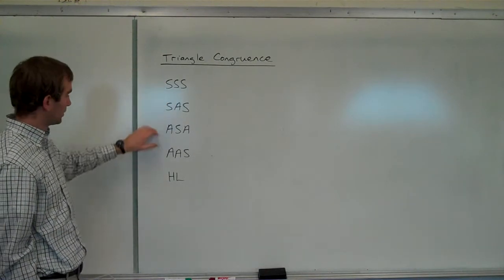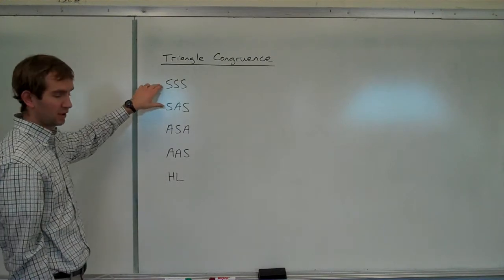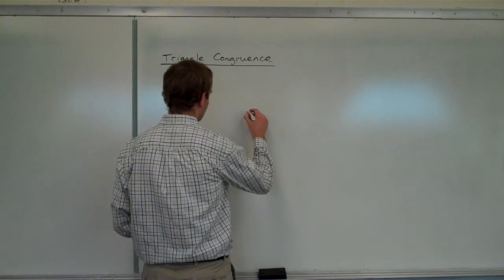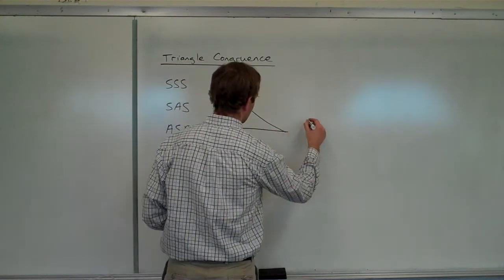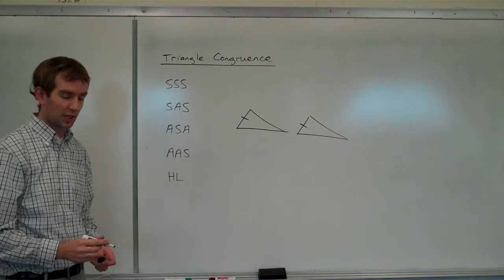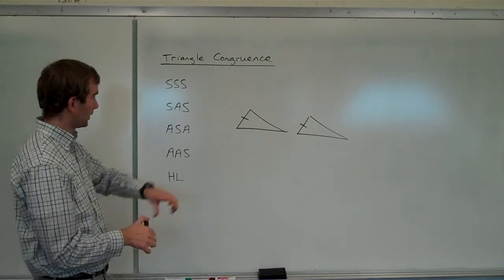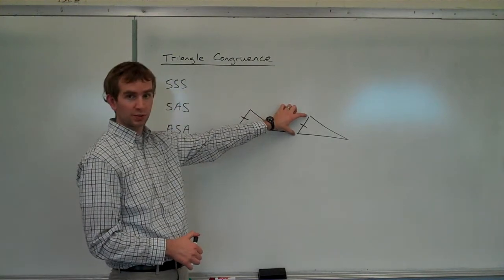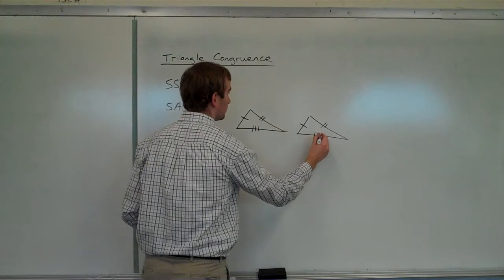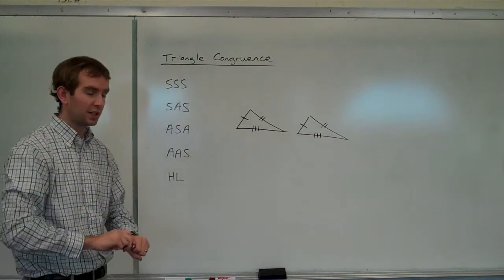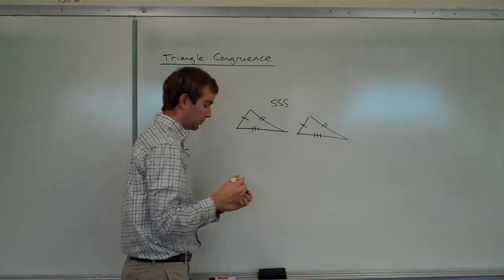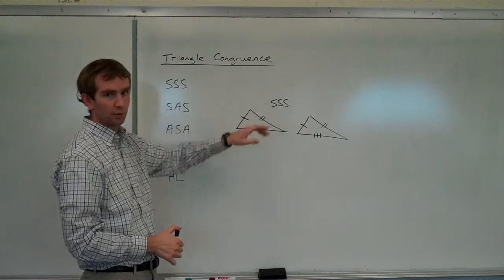These are a list of five postulates and theorems. The first one is Side-Side-Side. That means if we have two triangles and we know those two sides are congruent, this side is congruent to the corresponding side over here, we know these two sides are congruent, and then finally the third sides are also congruent — then we know these two triangles have to be congruent to each other because of the Side-Side-Side postulate.